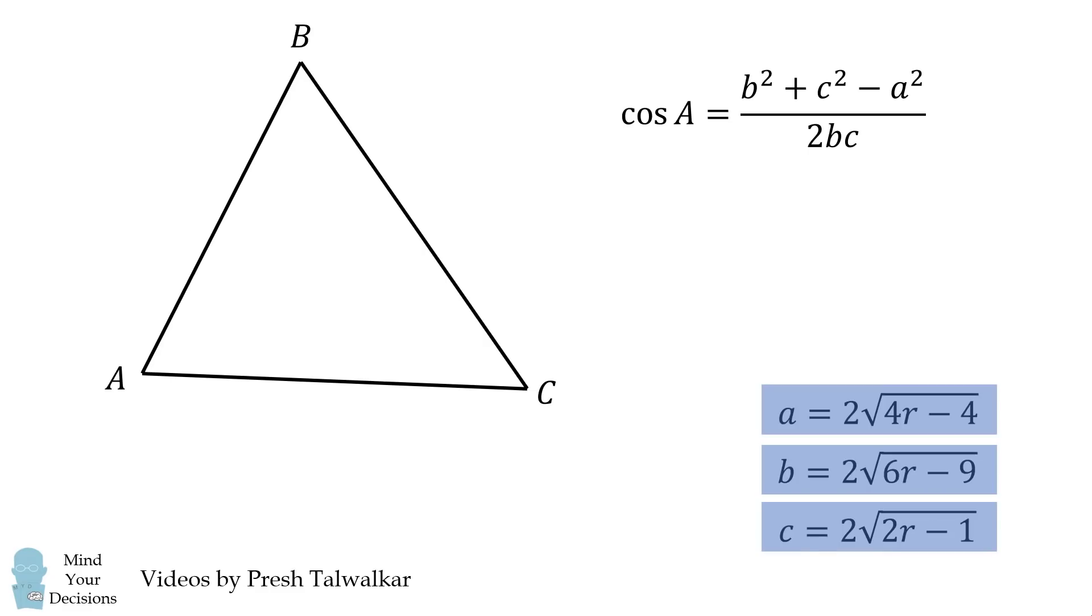We thus solve for the cosine of angle A, and we've already solved for a, b, and c, so we can substitute those values in. We're going to need to do a little bit of algebra. But once we do that, we can solve that cosine of A is equal to the following.